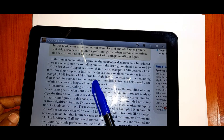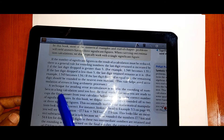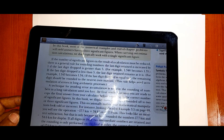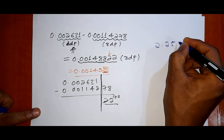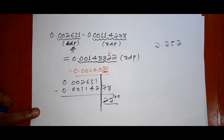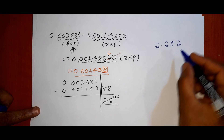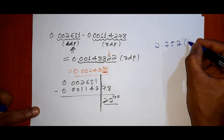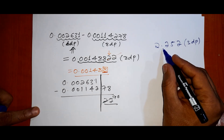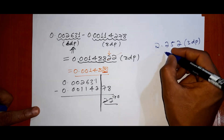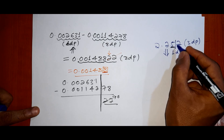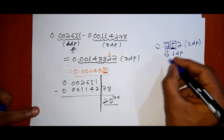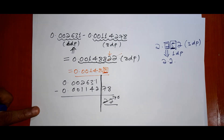If the last digit dropped is equal to five, the remaining digit should be rounded to the nearest even number. Example: 2.25 rounded to one decimal place — the digit before 5 is 2, which is even, so it stays as 2. The result is 2.2.